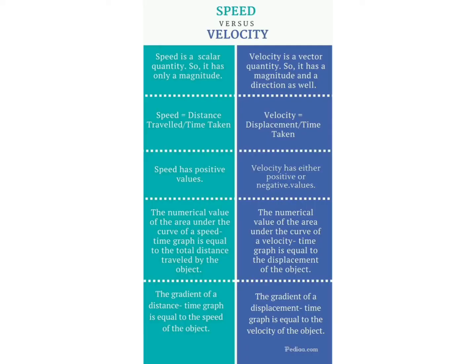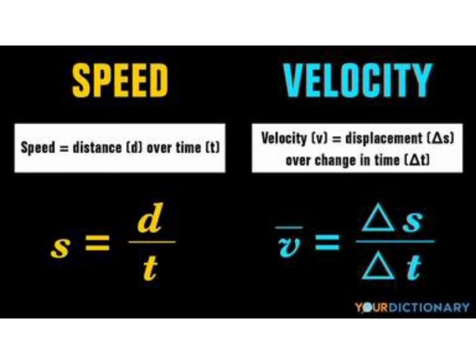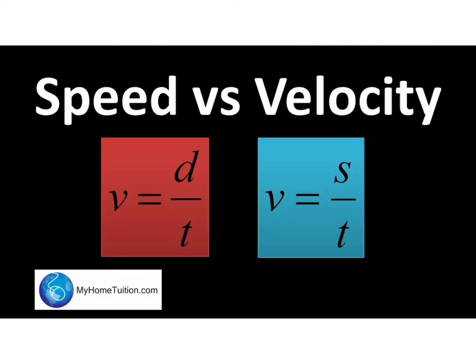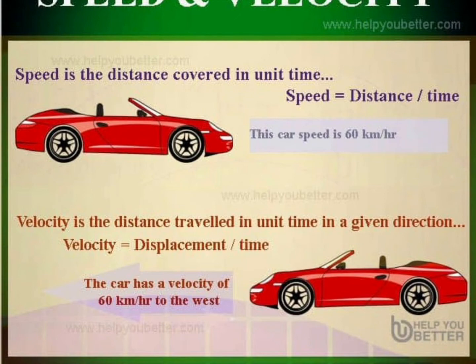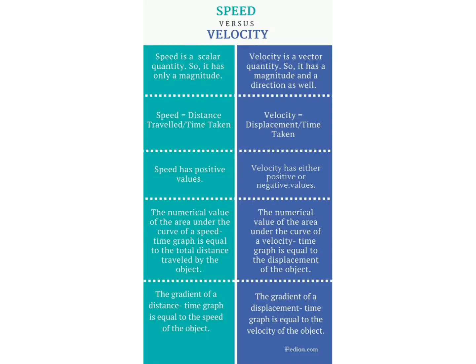Distance traveled in a given direction is known as displacement — meaning a body moves from one place to another and gets displaced. So velocity is equal to displacement upon time taken. Here v is the velocity of the body, s is the displacement of the body, and t is the time taken. The unit of velocity is the same as that of speed, namely meter per second.